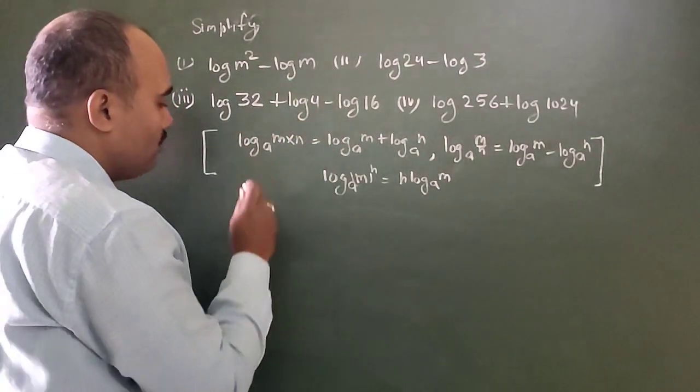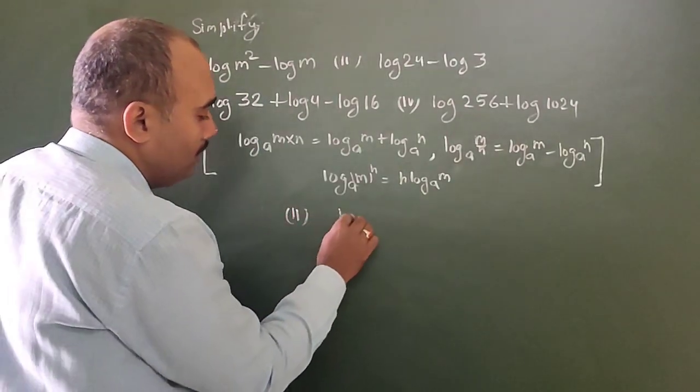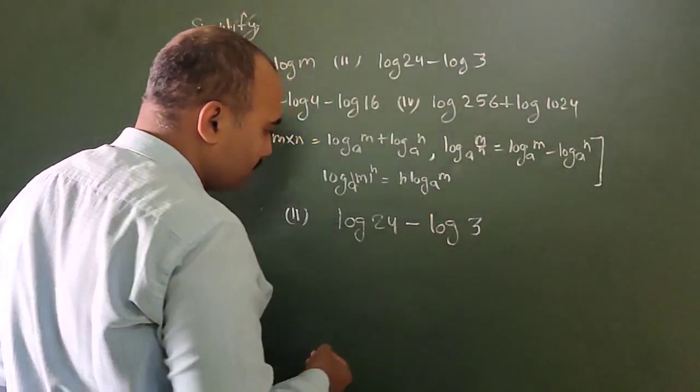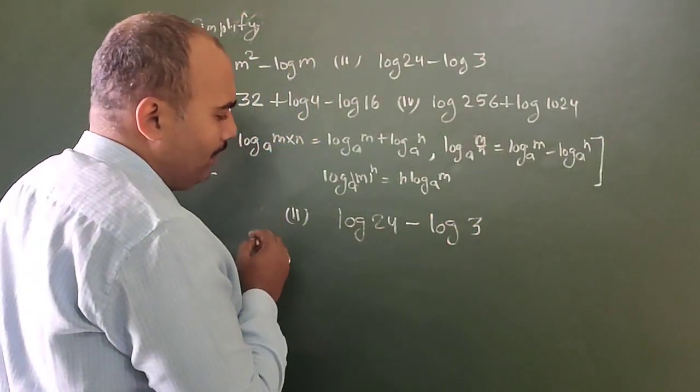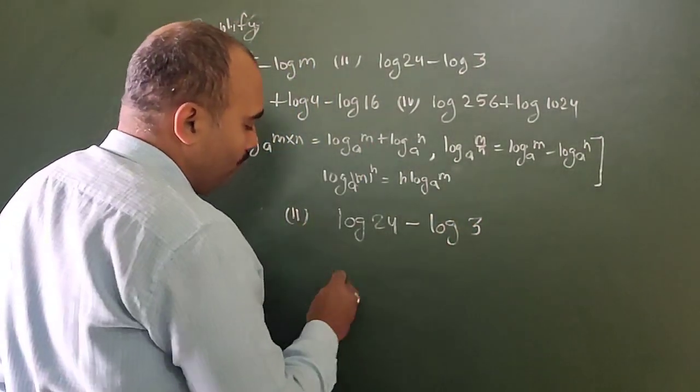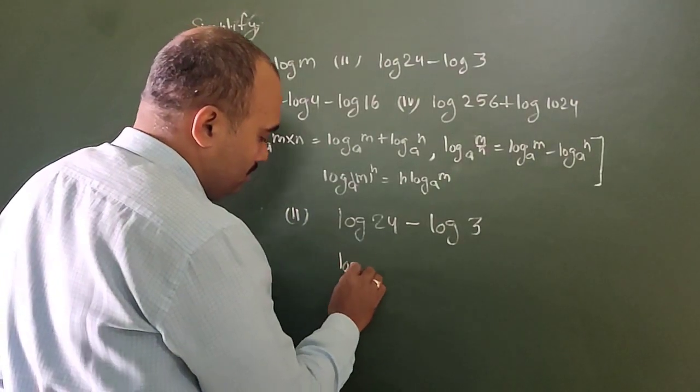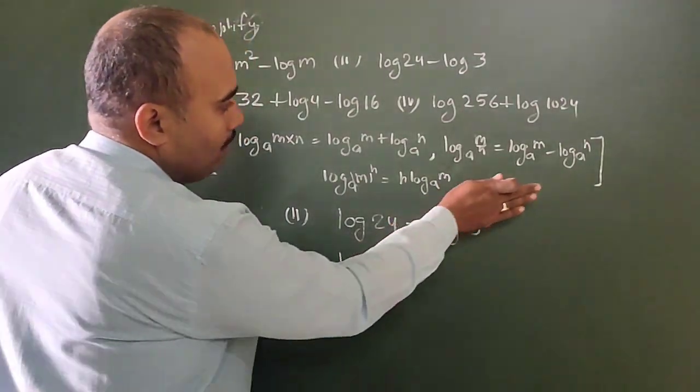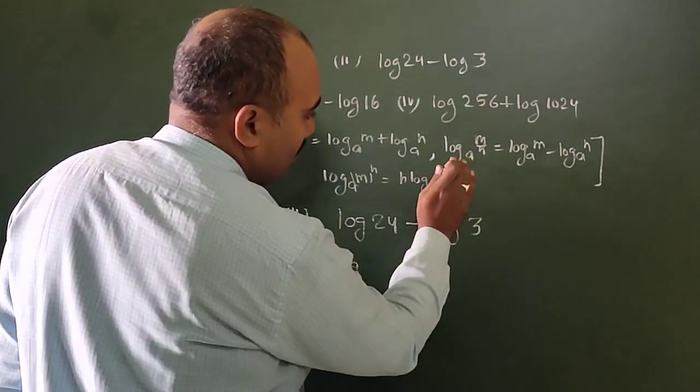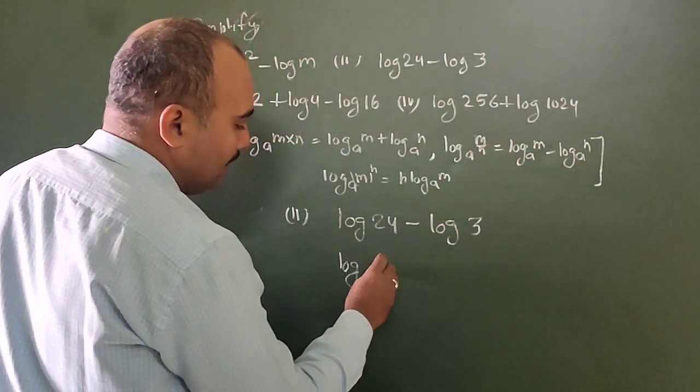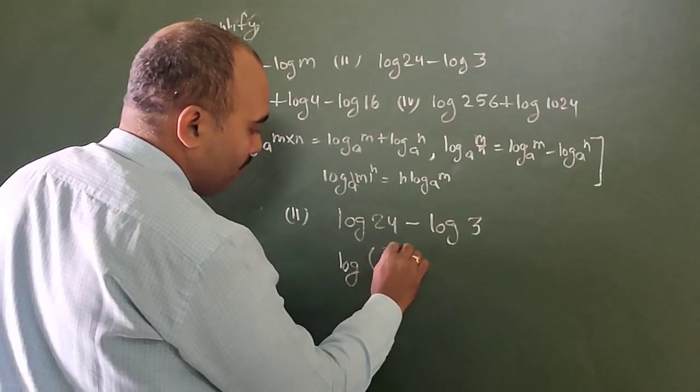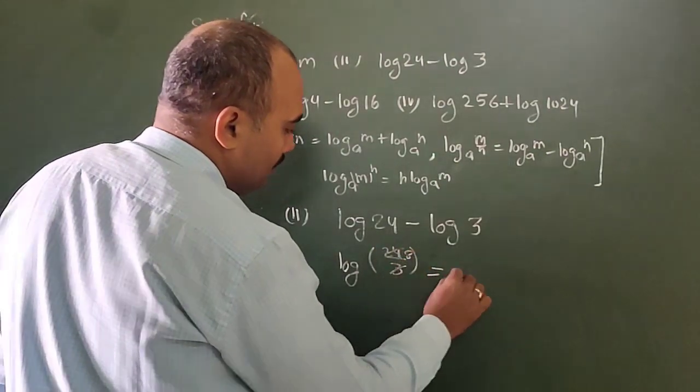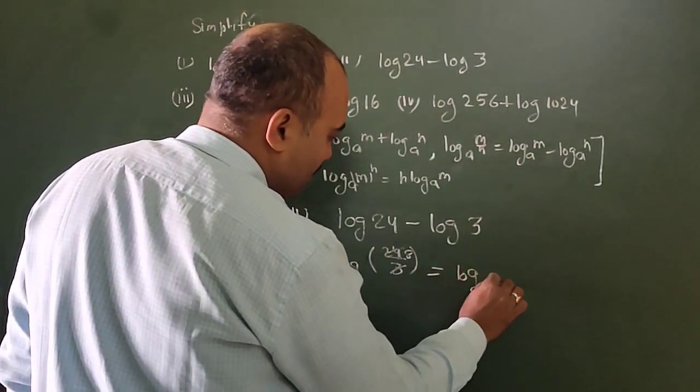Let's look at log 24 minus log 3. Now, 24 is written here with a minus sign. Minus sign means log m minus log n equals log m by n. So log 24 by 3. And here 3 times 8 is 24, so log 8.